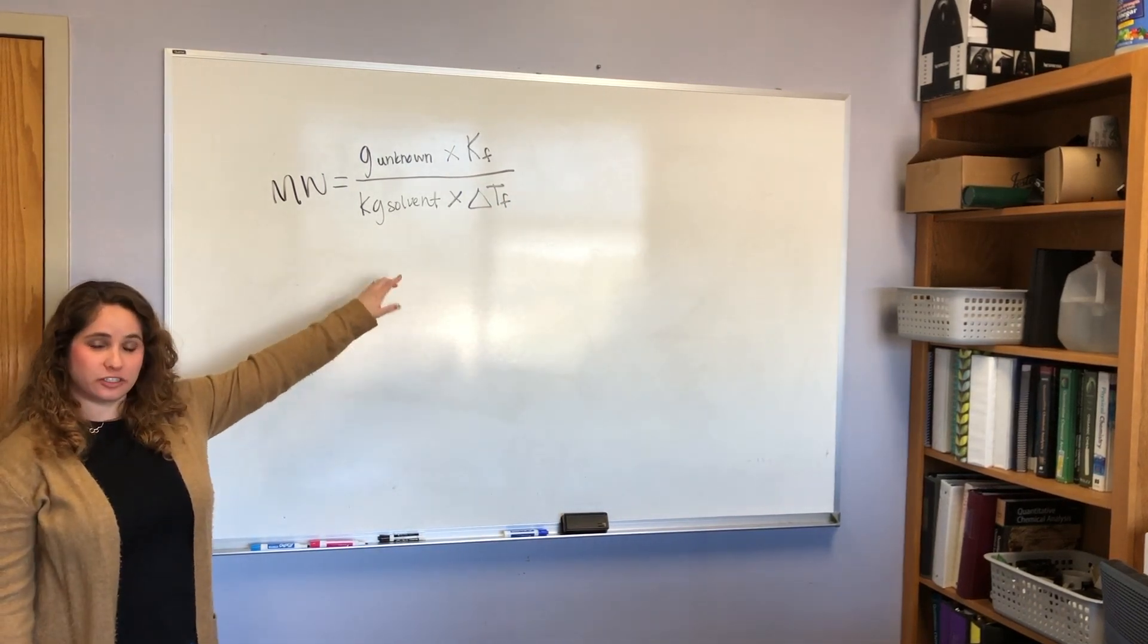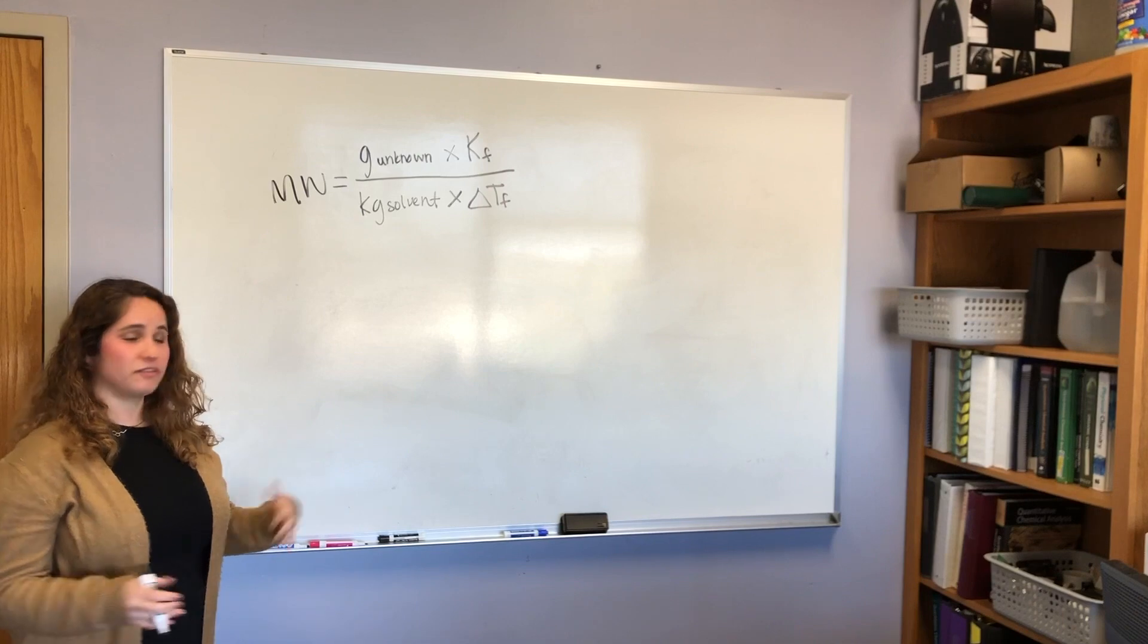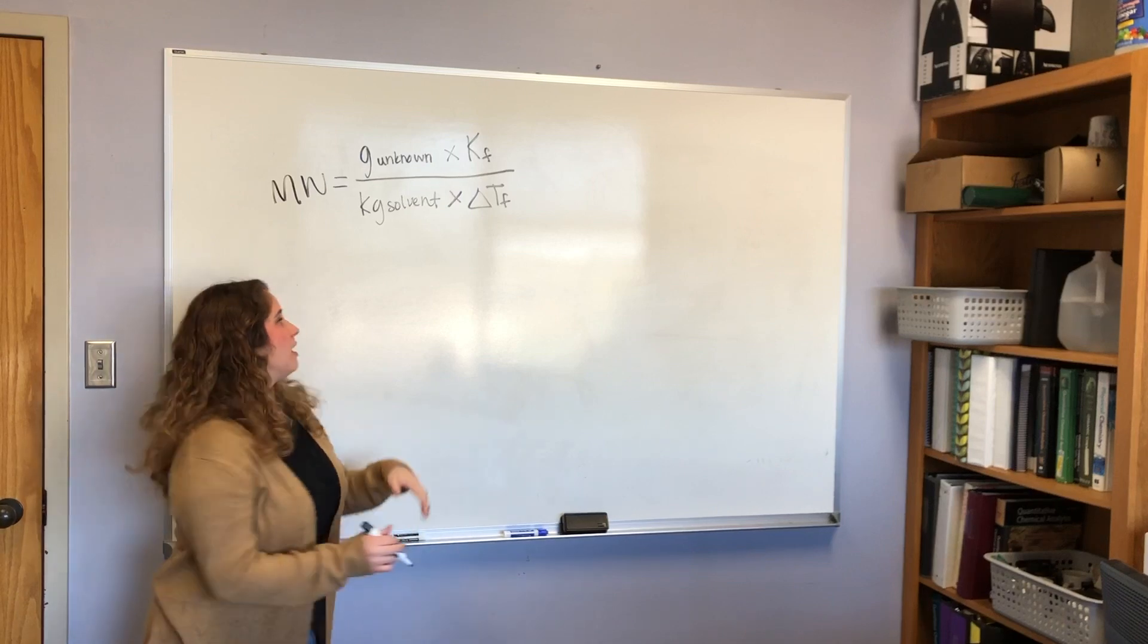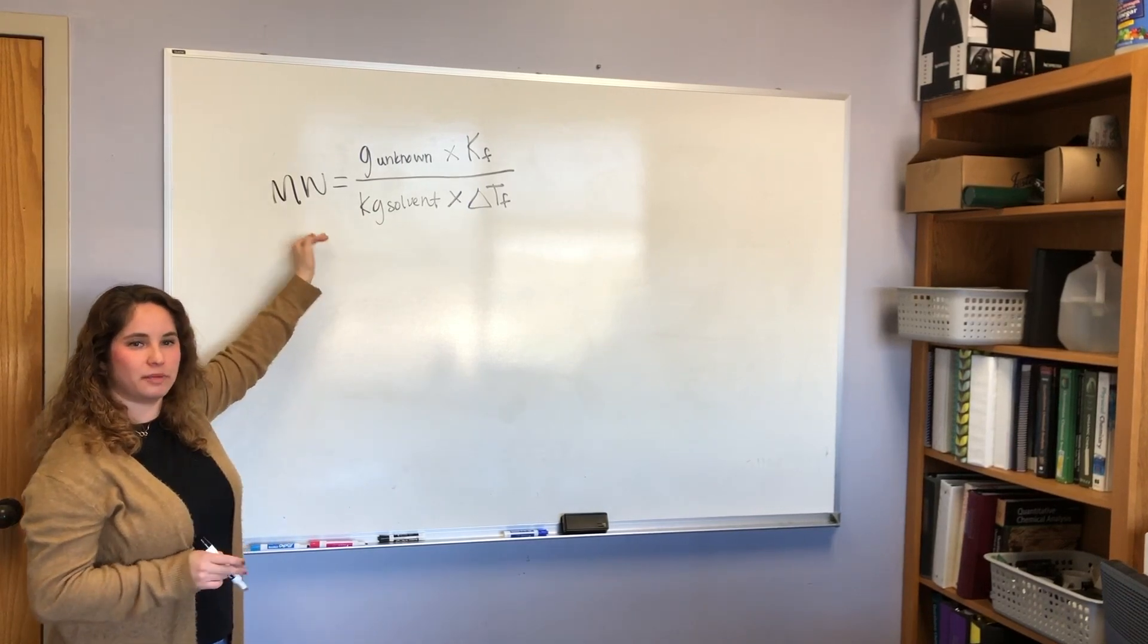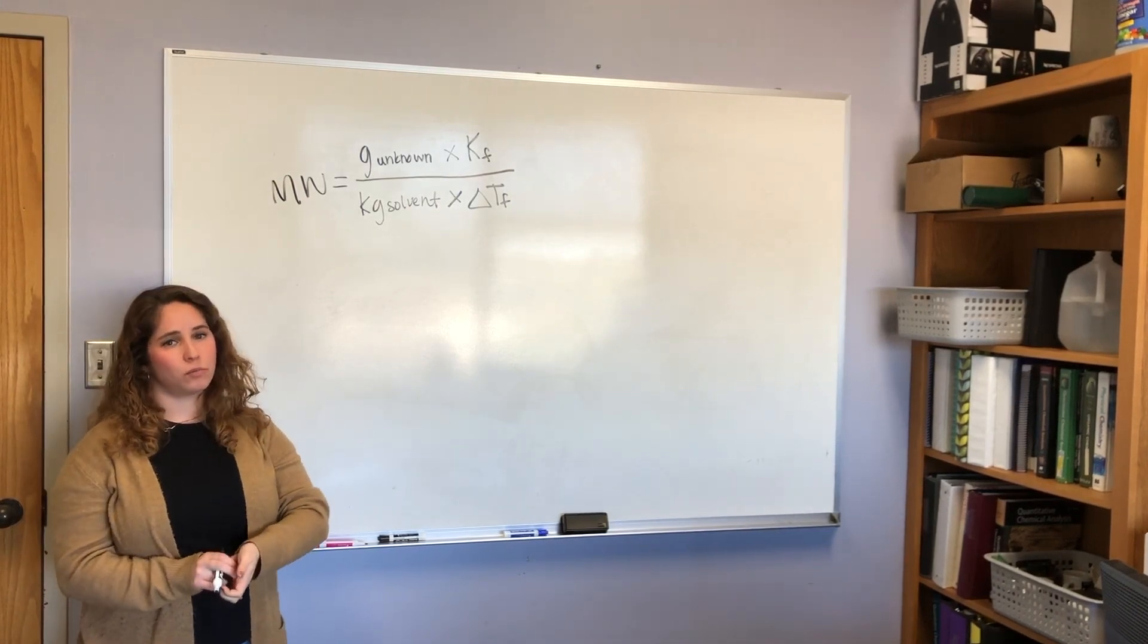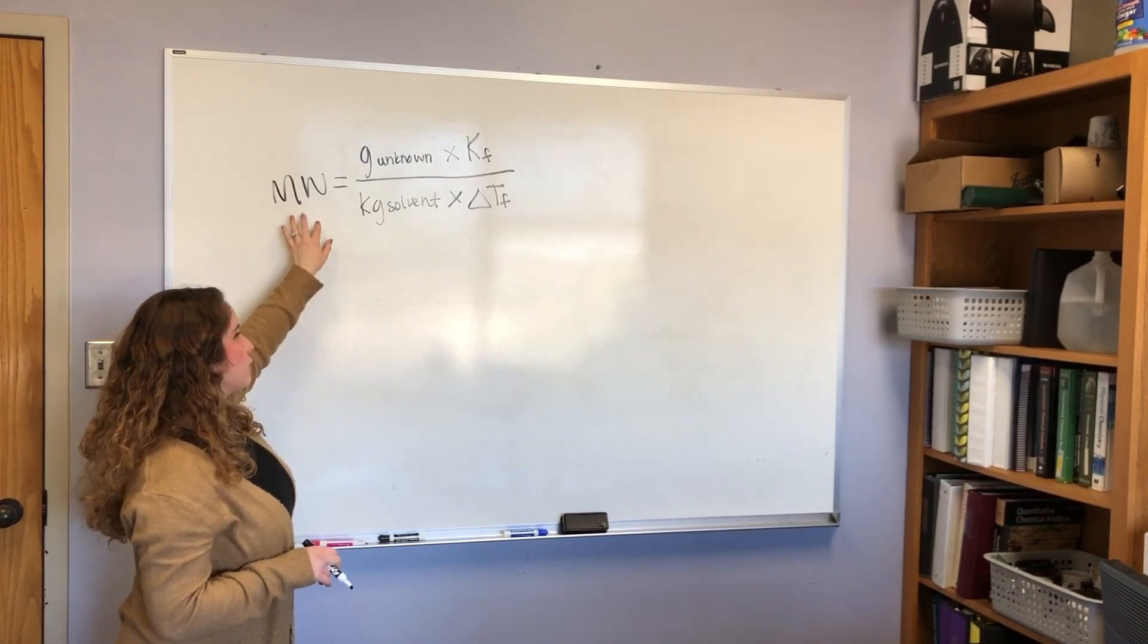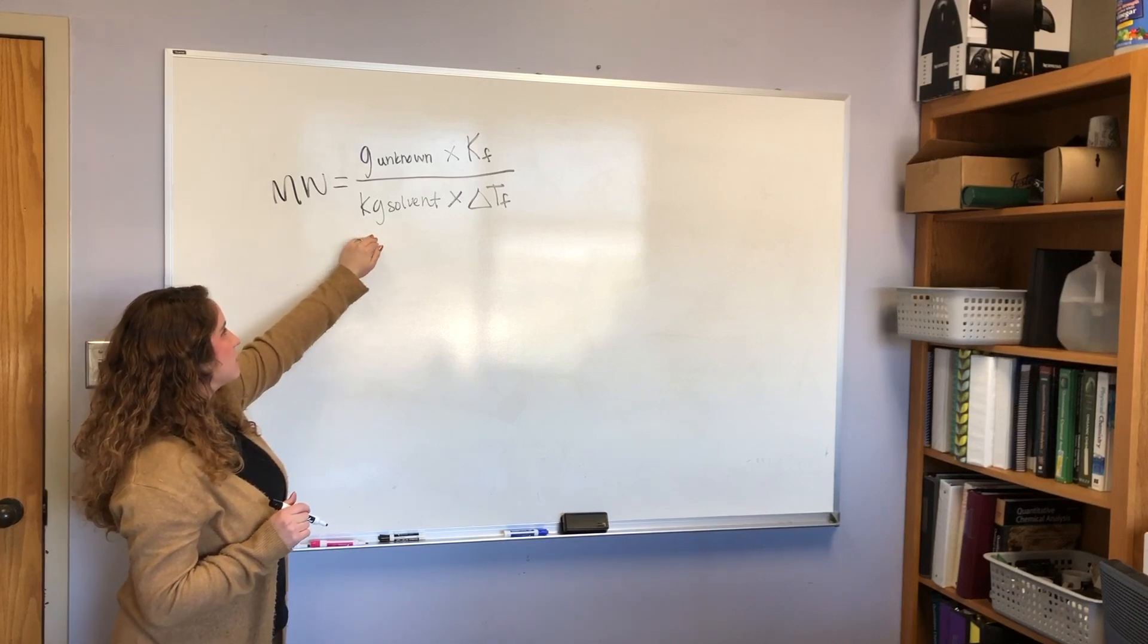So I'm going to point out a couple different features of this equation just so you can understand how even small changes in your data can actually really make a big difference. So imagine that you end up with a freezing point depression of two degrees celsius, but in actuality maybe it was supposed to be four degrees celsius. That means you're dividing by a number that is two times too small and your molecular weight is going to be two times bigger than it should be. That's going to put you way outside the range of what you're actually supposed to have, which is why that curve fitting that we just talked about is really important. If it lines up with your data and you actually calculate that xy value, you're going to end up with a very close freezing point depression and your molecular weight should be in the right area.